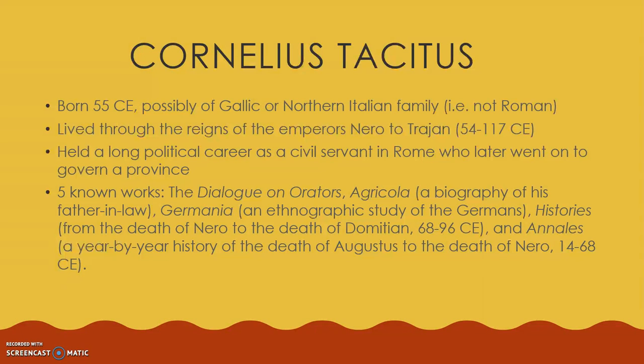Notice the date he was born — 55 CE — and remember the date of the rebellion is 61 CE, so Tacitus was six when this happens. Think about how his proximity to the events might affect his ability to write a history of them. Tacitus lived through the reigns of the emperors from Nero through Trajan, 54 to 117 CE, and was very much involved in the political machine of Rome. He had a long political career and later went on to govern a province, much like Suetonius Paulinus who was put in charge of Britain.